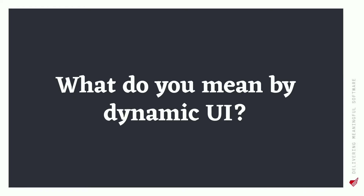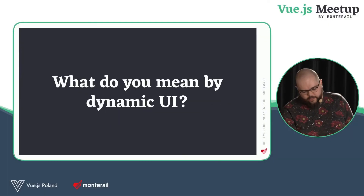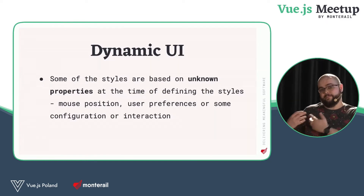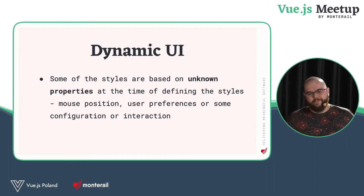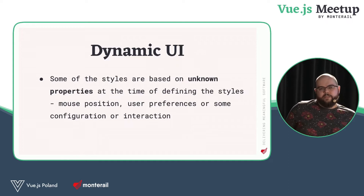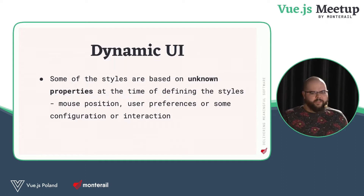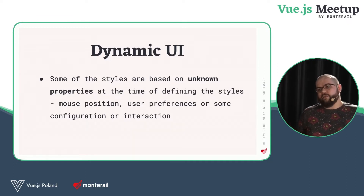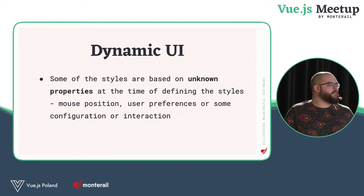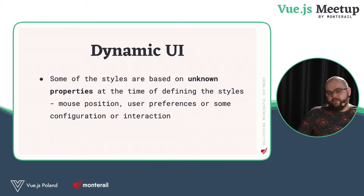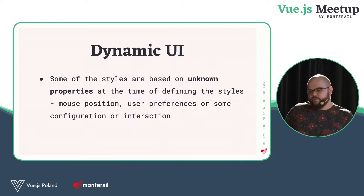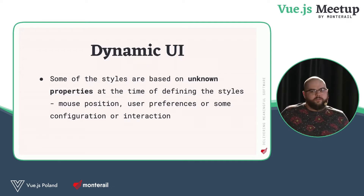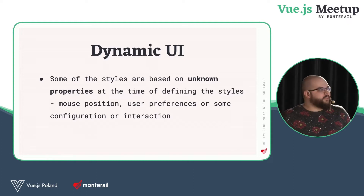What I mean by dynamic UI is that when the styles you have are not entirely known, or mapping them out is hard because there are so many possibilities. Imagine you want to style something dependent on mouse position — well, generating classes for every mouse position would be extreme. But imagine something more complex, like an application like Figma. You can place elements there, resize them, rotate them, change the colors, borders, and everything. There is little staticness — all of it is dynamic. You don't know what the user is going to do. So that's quite hard.